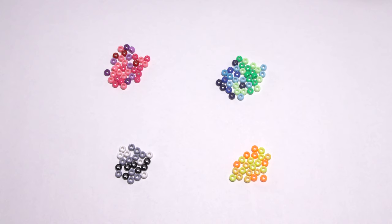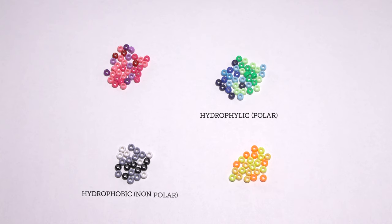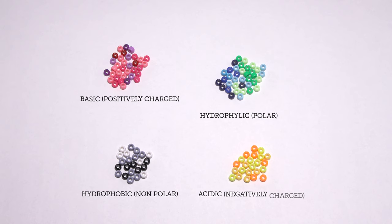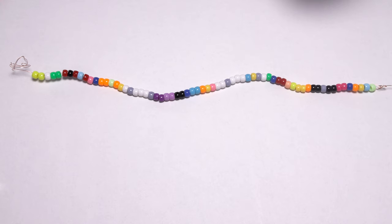We've talked about how information travels from mRNA to make a protein, but we haven't yet talked about how proteins achieve their final 3D structure and function. Among the 20 different amino acids, there are four main groups. One is hydrophilic — those interact well with water. Another is hydrophobic — those do not interact well with water. The other two are based on electrical charge: amino acids can be positively or negatively charged. Proteins are not just beads on a string; they have a 3D structure that allows them to perform certain functions.